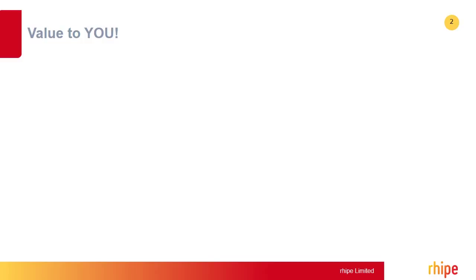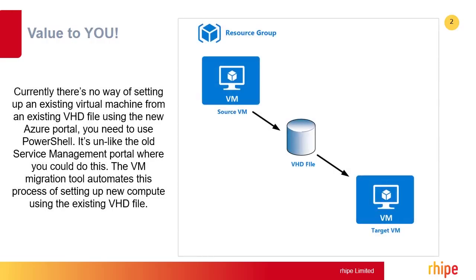What is the overall value and business benefits of using an automated Azure virtual machine migration tool? We all know that all virtual machines in Azure use VHD files. Currently, there's no way of setting up an existing virtual machine from an existing VHD file using the new Azure portal. You need to use PowerShell instead. It's unlike the old service management portal where you could do this. The VM migration tool automates this process of setting up new compute using the existing VHD file.